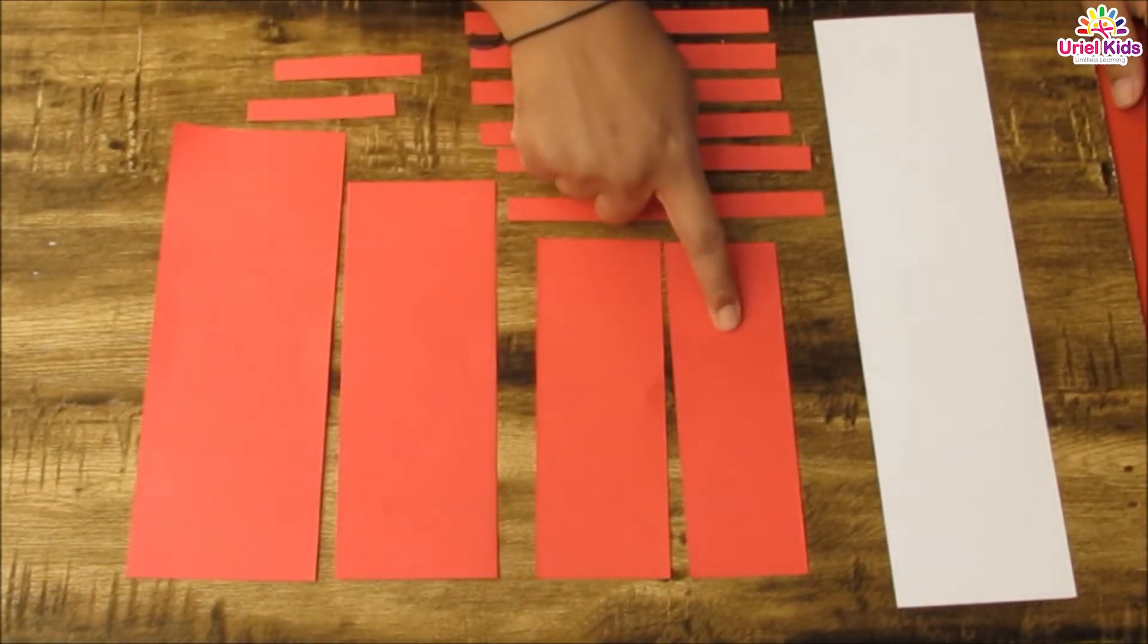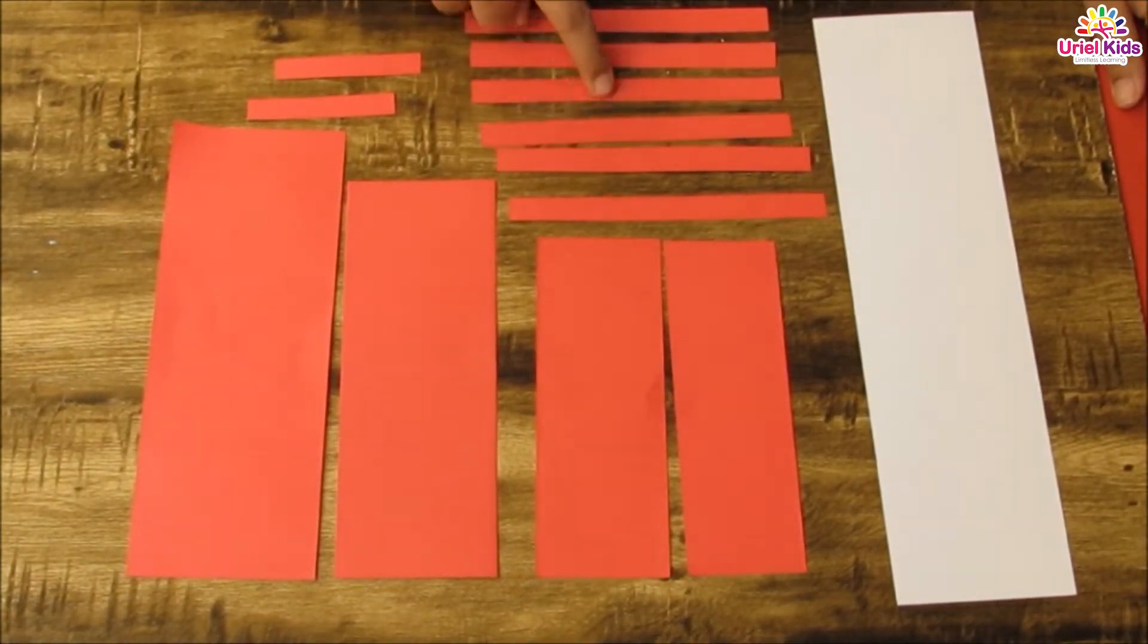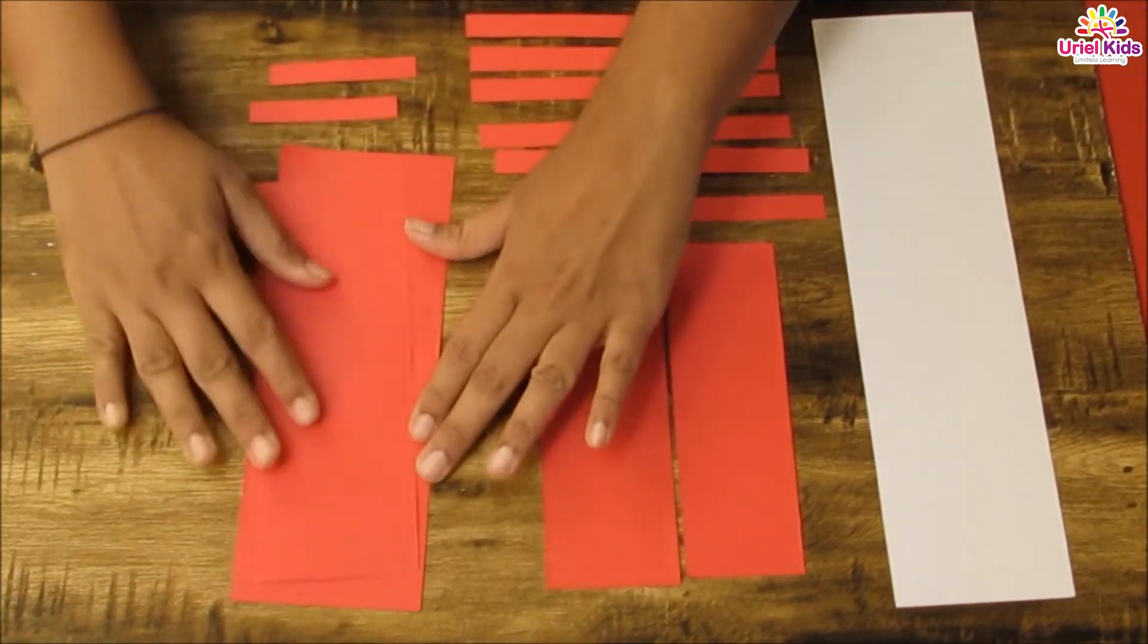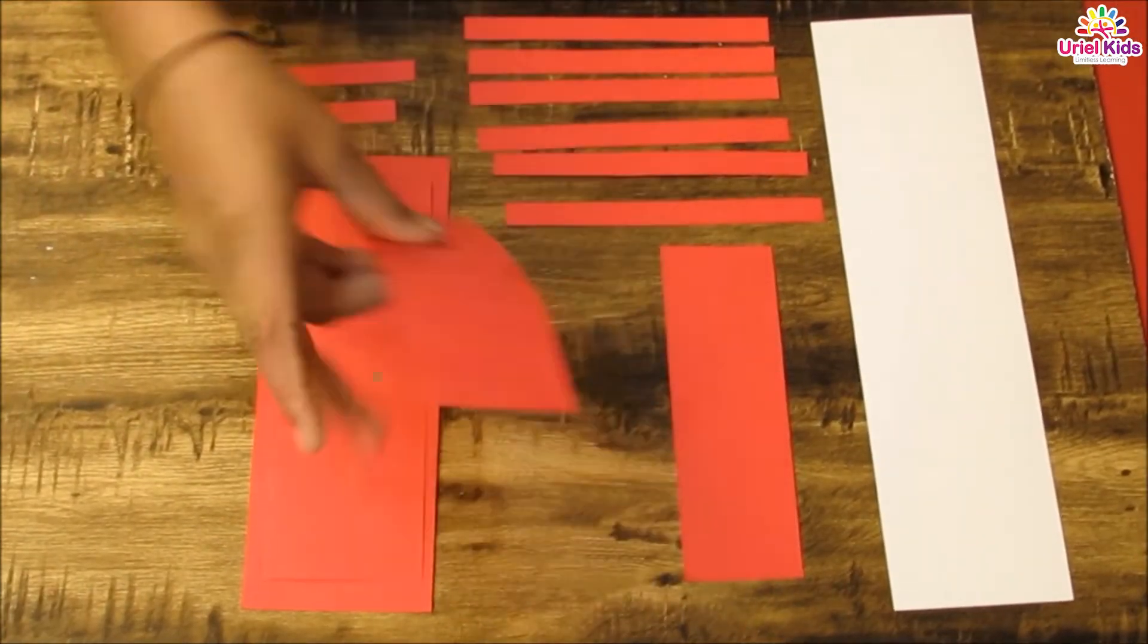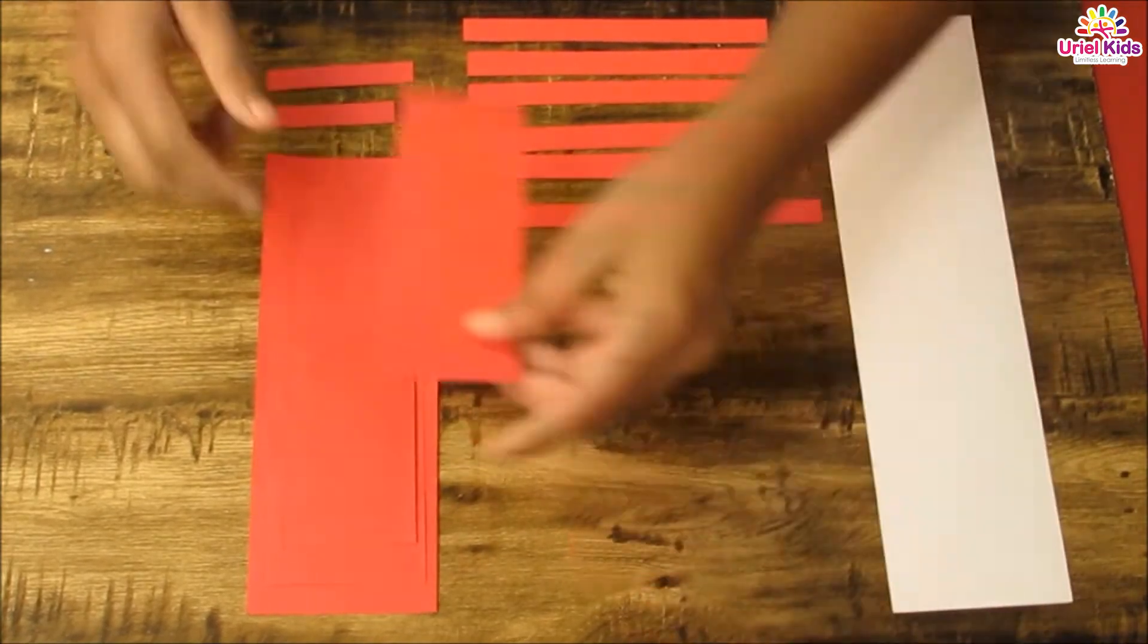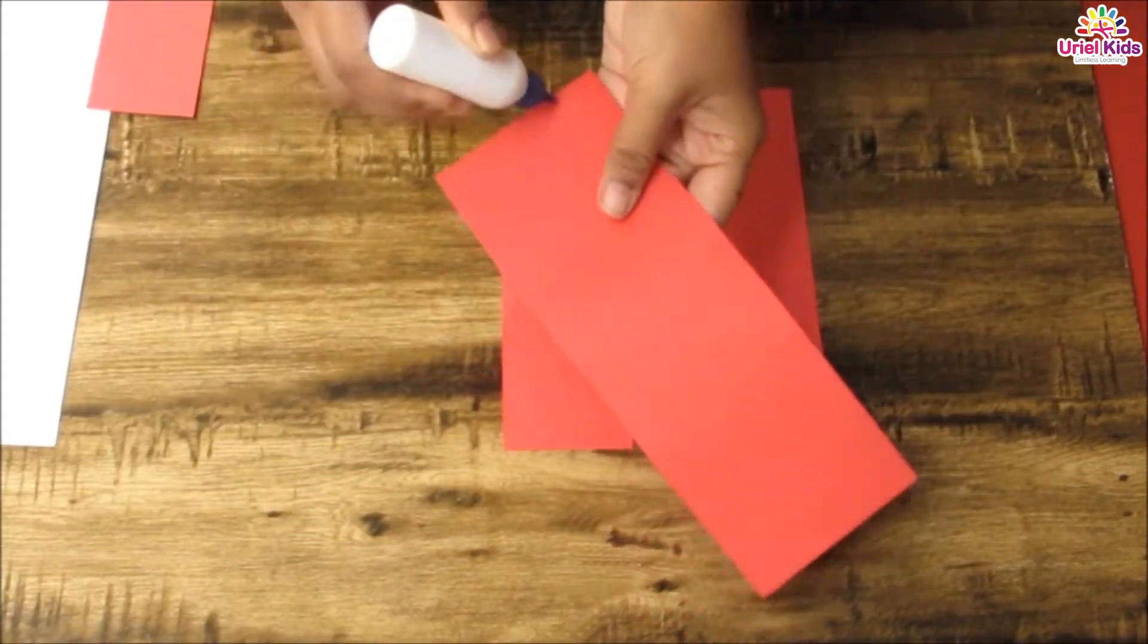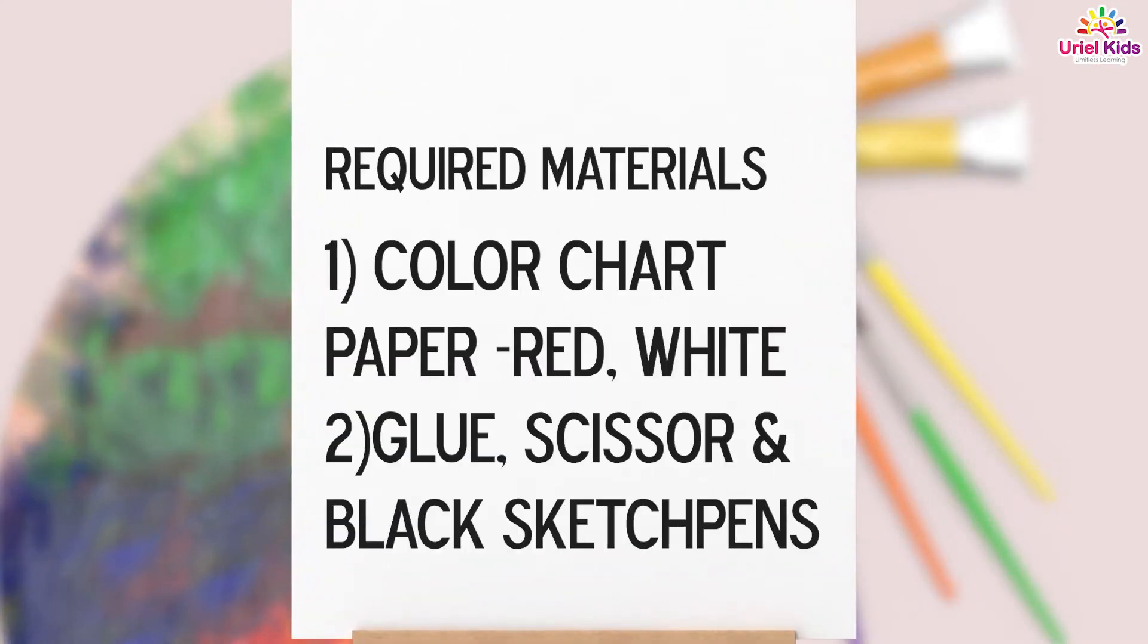Hello children, today we are going to make a cylinder shaped ant. We are going to have so much fun. Let's start. For this craft we are going to need colorful chart paper, glue, a pair of safety scissors, and a black marker.